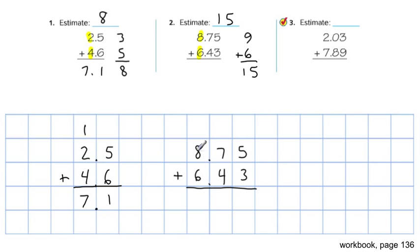The 8 and the 6 are lined up perfectly. All right, so then it's just addition. 5 plus 3 is 8. 7 plus 4 is 11. And then 1 plus 8 is 9. Plus 6 is 15. And now you have the answer 15.18. Is it close to our estimate? Yeah, it's pretty close. 15 and 15.18 are in the same ballpark. So we know we're on the right path there.